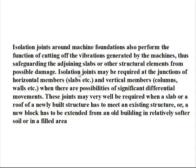Isolation joints may be required at the junctions of horizontal members such as slabs, and vertical members such as columns, walls, etc., when there are possibilities of significant differential movements. These joints may also be required when a slab or roof of a newly built structure has to meet an existing structure, or when a new block has to be extended from an old building in relatively softer soil or in a filled area.